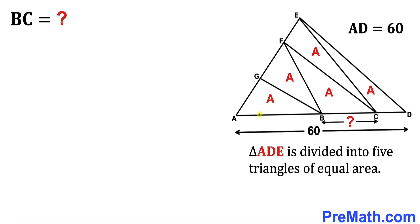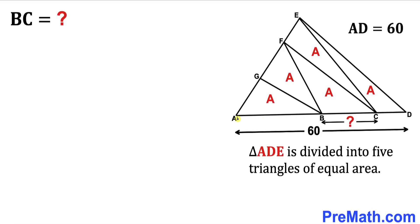Welcome to Pre-Math. In this video we have triangle ADE that has been divided into five smaller triangles of equal areas. This is the first triangle of area A, this is the second triangle with area A, this is the third, this is the fourth, and all these triangles have the same area A. Moreover, this side length AD is 60 units, and we are going to calculate this side length BC.